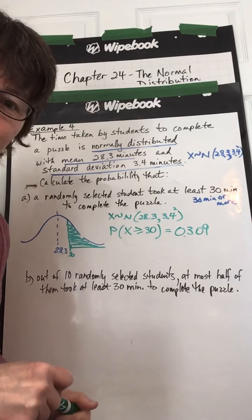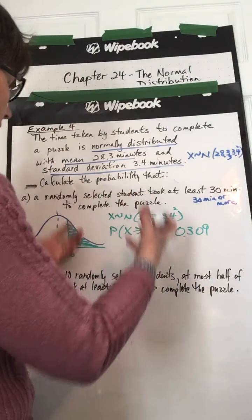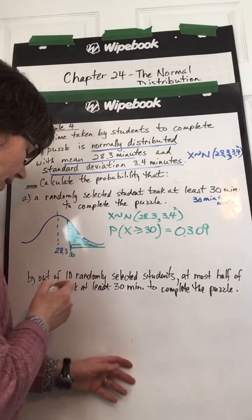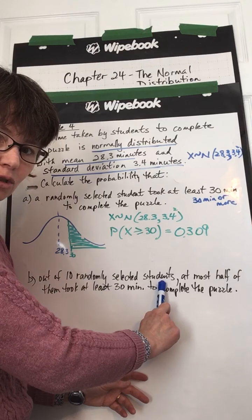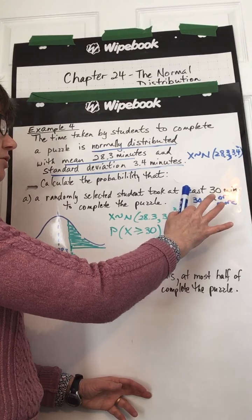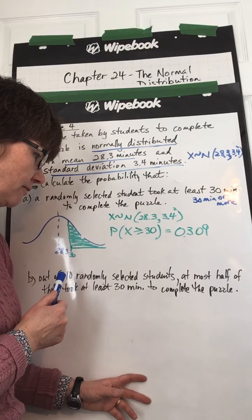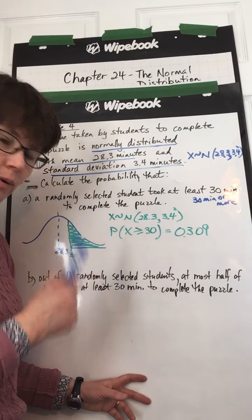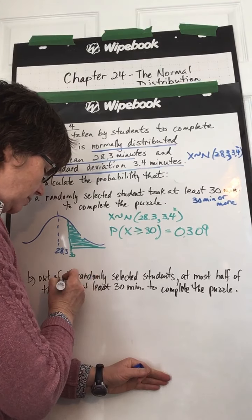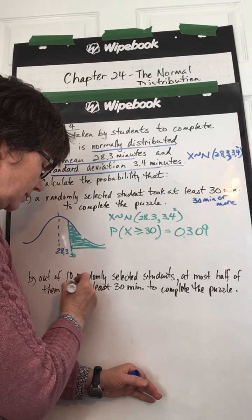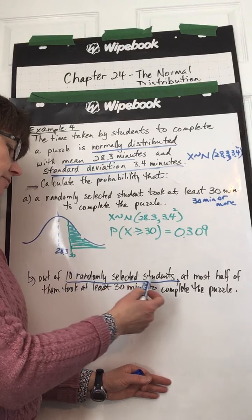Now here's where it gets interesting. Because now we're going to start talking about us taking a certain number of those trials. OK, part B says, out of 10 randomly selected students. OK, so now we have this normal distribution. We know how the percentages work on the normal distribution curve. But now we are going to take 10 randomly selected students. OK, this is going to be a major hint for us. 10 randomly selected students.